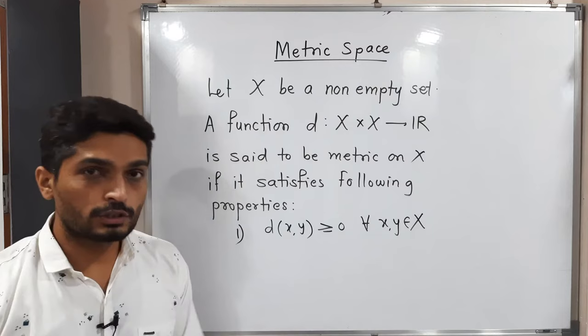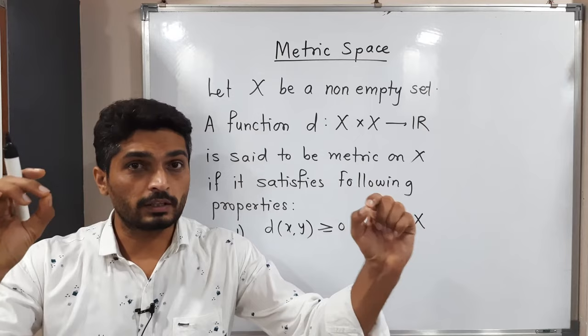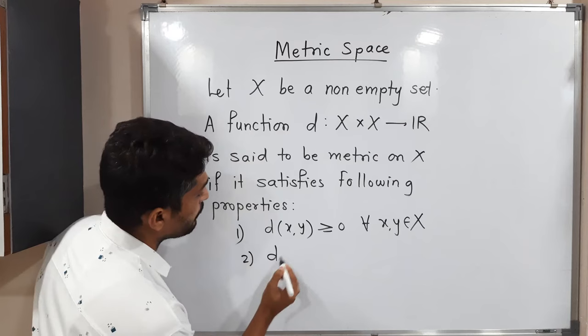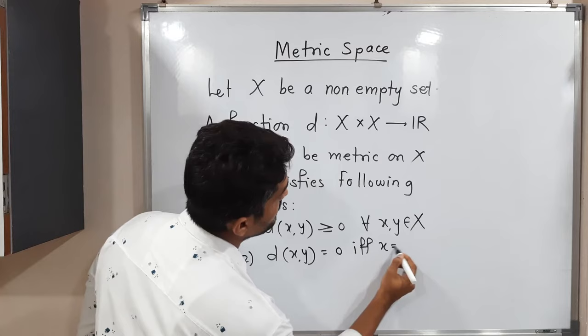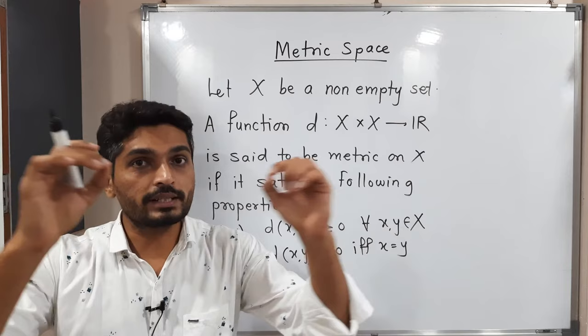The second property is also obvious: distance between two points is zero if and only if these two points are the same. So the second property is D(X, Y) = 0 if and only if X = Y. If the distance between two points is zero, the two points are the same; or conversely, if two points are the same, the distance between them is zero.